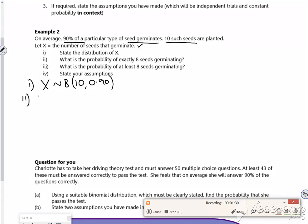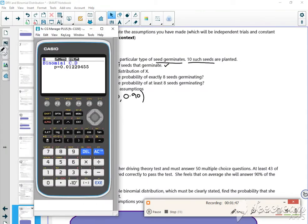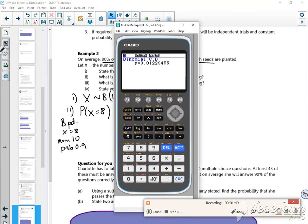Part 2. So the probability that X is equal to 8. So I'm going to do a BPD, with X is equal to 8, num trials 10, and probability 0.9. So if you can, you just do that for me, so you can get the same, and move that over so we can see it.